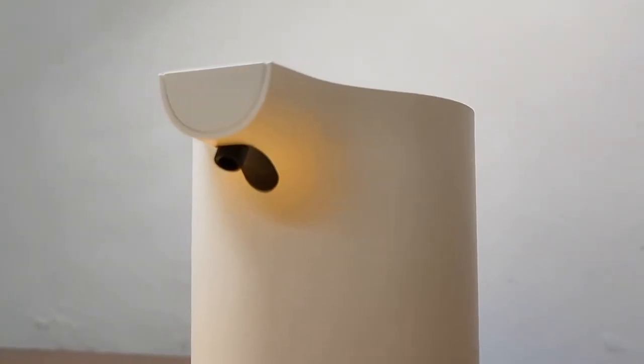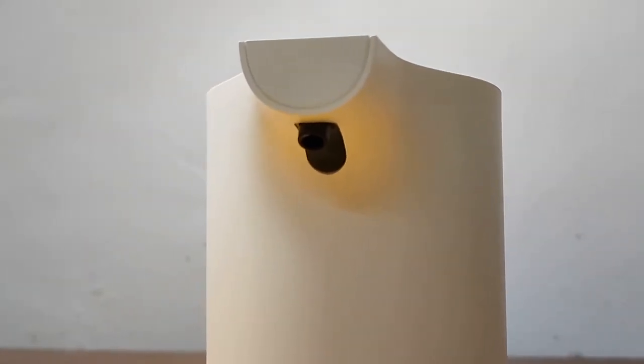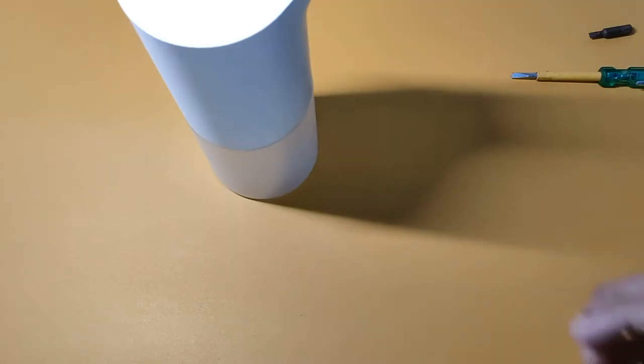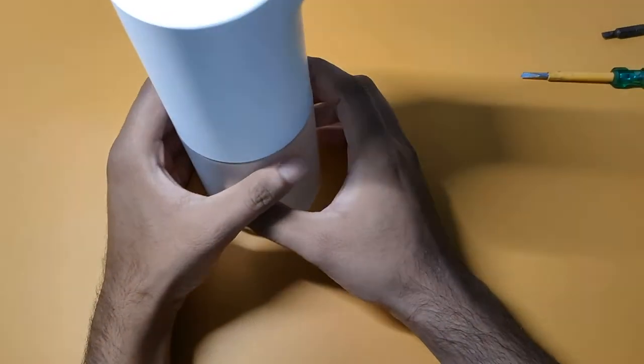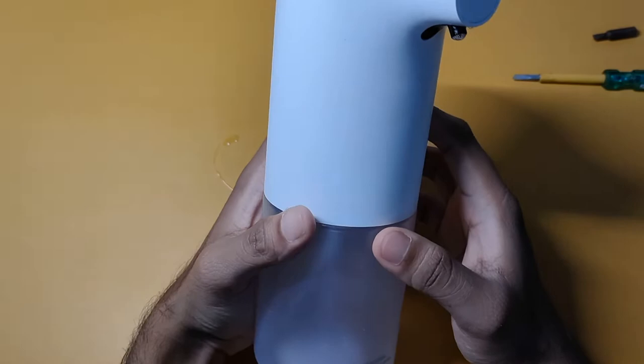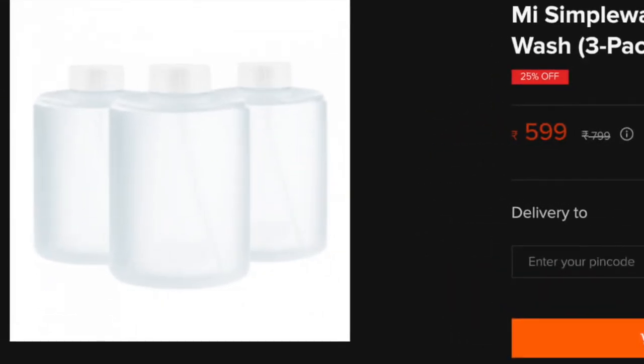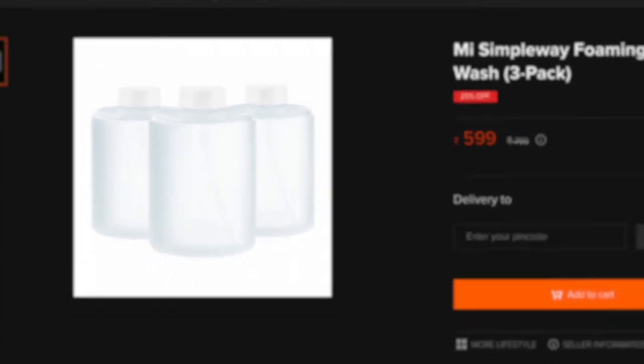Hi, welcome to my channel. Today we are going to talk about Xiaomi soft dispenser refilling. There are two ways: one is buying extra Xiaomi simple way foaming hand wash from Mi store, or if you already have another hand wash you can use that, but there is a catch.